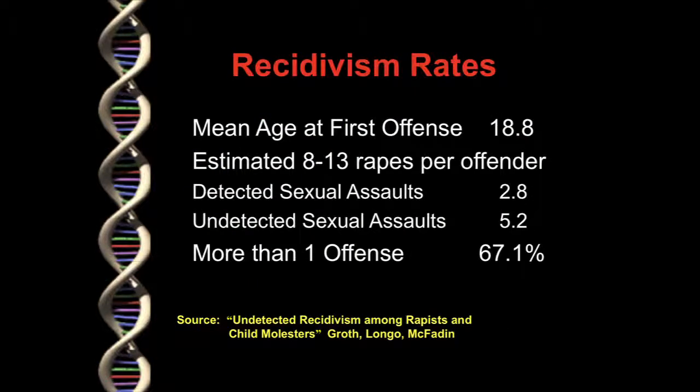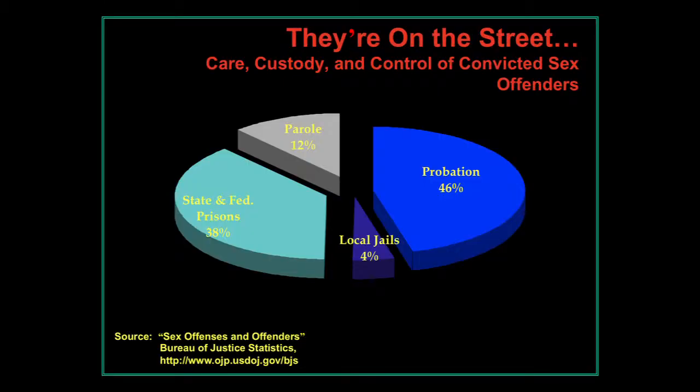The mean age of the first offense for a sexual offender is 18.8 years, with an estimated 8 to 13 rapes per offender. The ratio of detected to actual sexual assaults is 2.8. More than 67% commit more than one offense — and they're on the street.